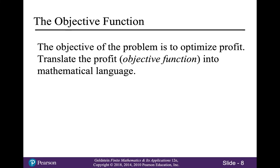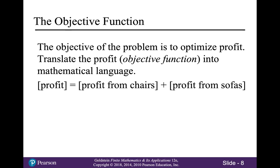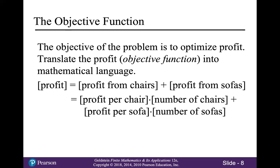Next we talk about the objective function. The objective in this problem is to optimize profit, so let's translate the profit into mathematical language. The profit is going to come from the profit from chairs plus the profit from sofas, which in turn will come from the profit per chair times the number of chairs plus the profit per sofa times the number of sofas. The profit per chair is $80 and the profit per sofa is $70, so our objective function is going to be 80X plus 70Y.